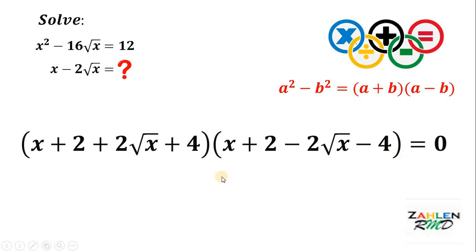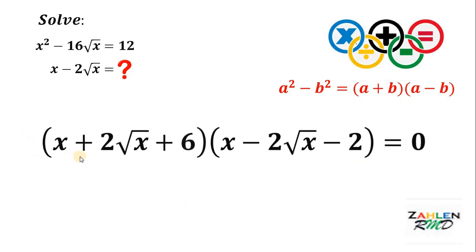Now, simplify both factors a little bit by combining like terms. On the first factor, we can combine 2 and 4. On the second factor, we can combine positive 2 and negative 4. If we do that, we get x plus 2 times square root of x plus 6, multiplied by x minus 2 times square root of x minus 2, and it is equal to 0.